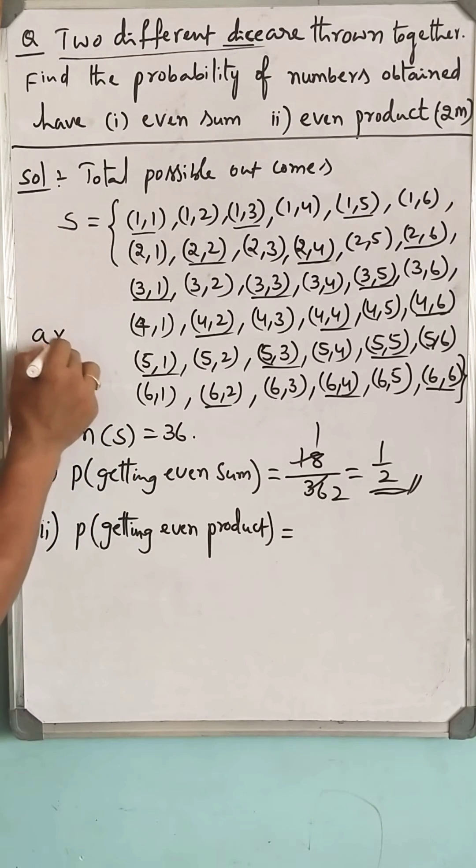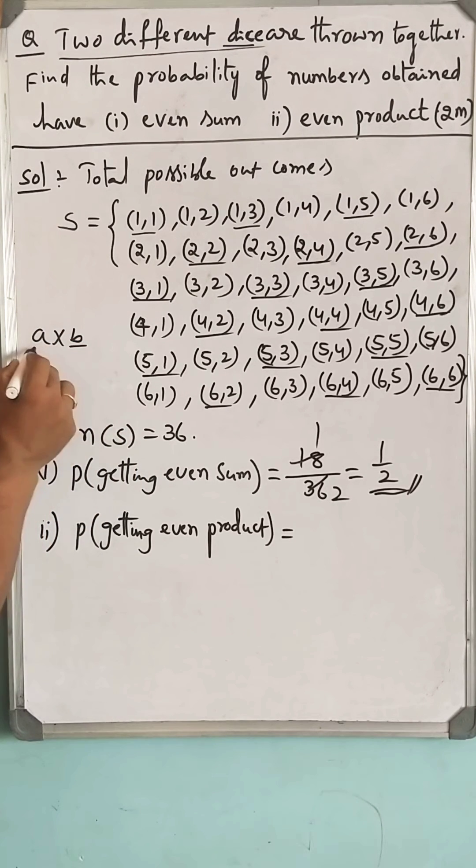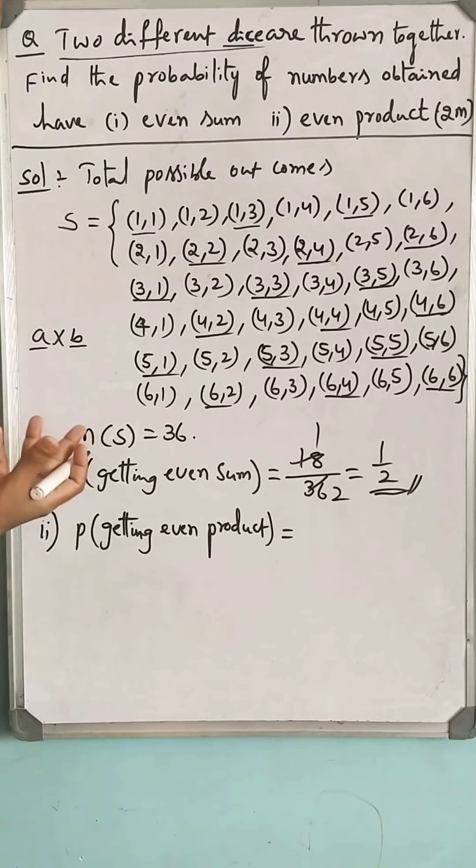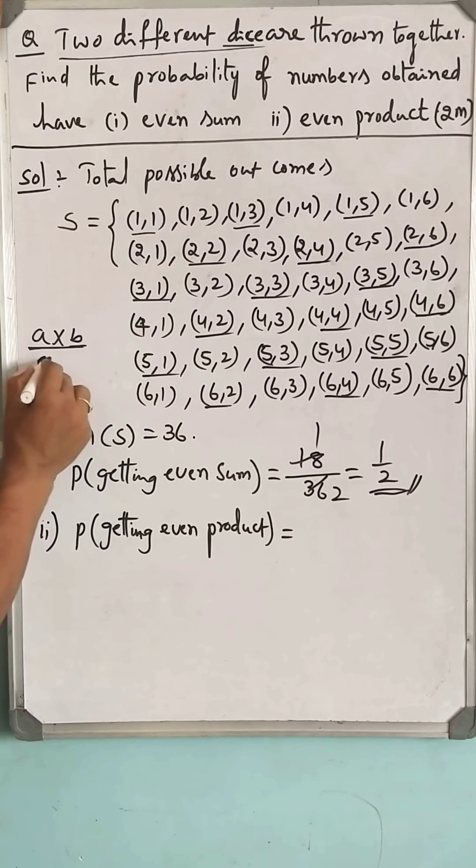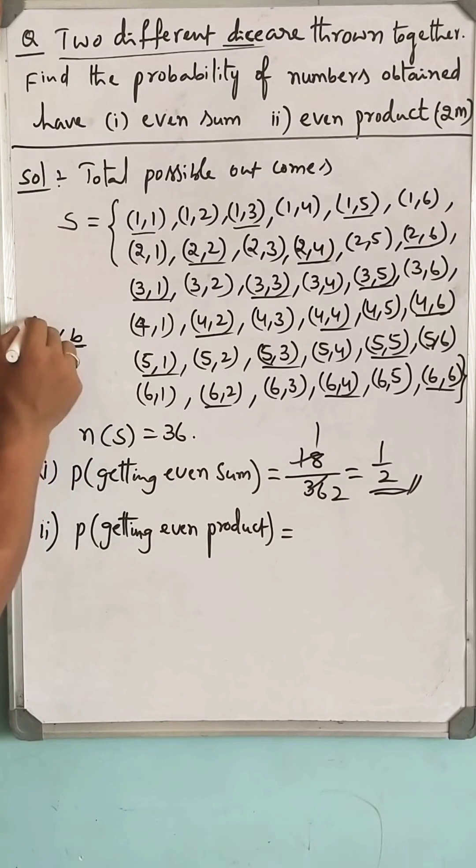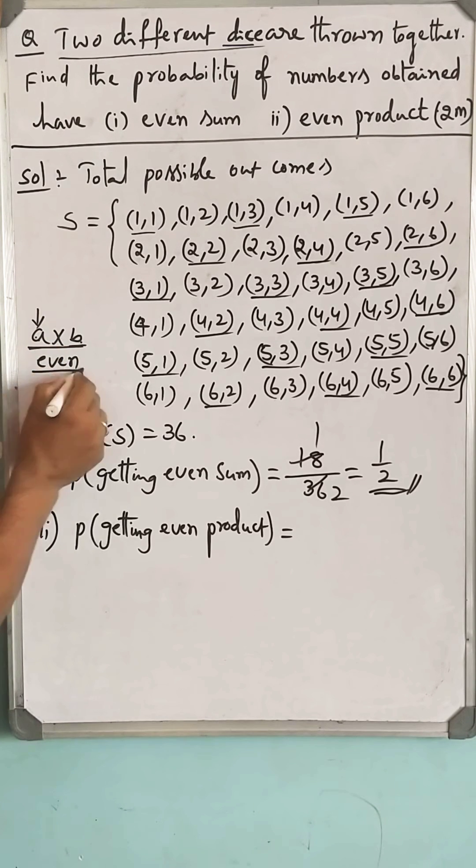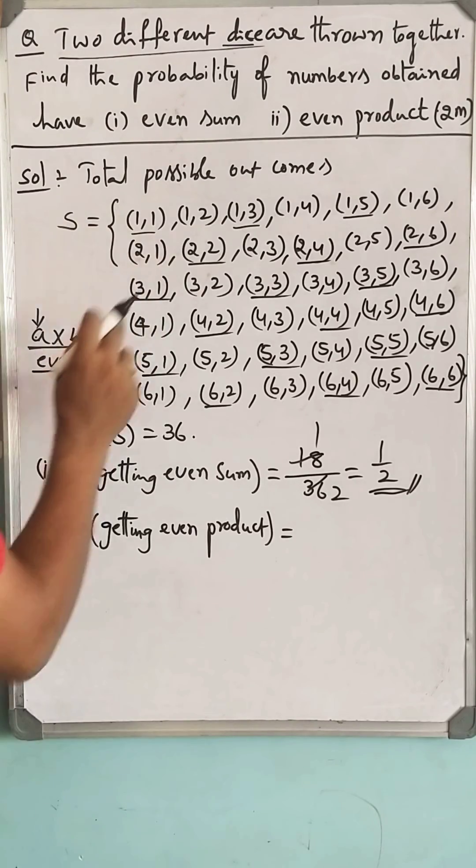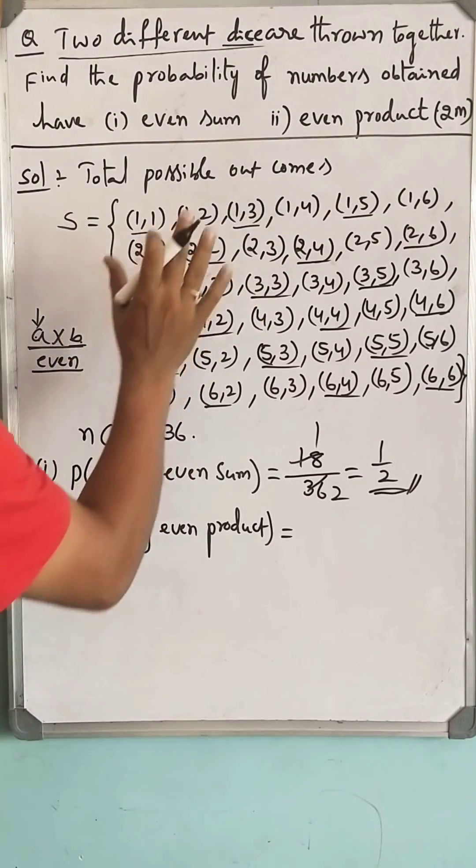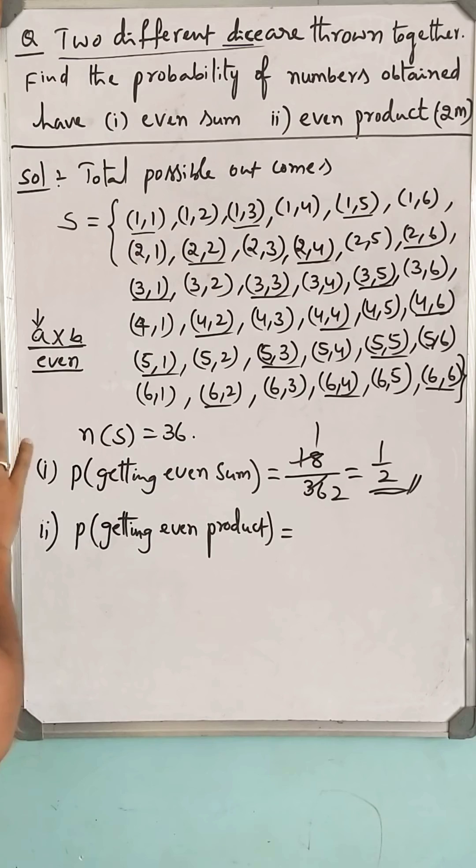That is, in a product, either multiplier or multiplicand is even, then the product is automatically even. Even into anything is even. If either a or b is even, then the product becomes even. If you have one even number in the ordered pair, automatically their product is even.